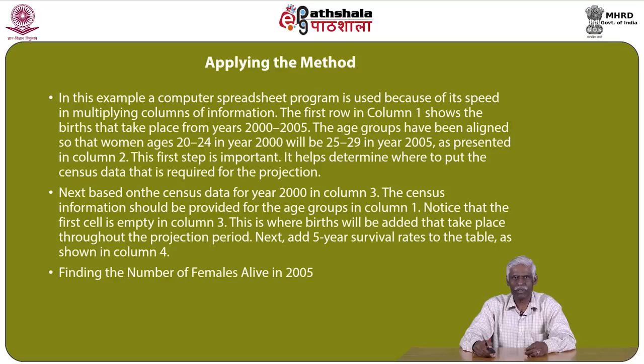The first row in column 1 shows births that took place from 2000 to 2005. The age groups are aligned so that women aged 20 to 24 in year 2000 become 25 to 29 in 2005. This alignment step is important as it determines where to place the census data required for the projection. The census information is provided for the age groups in column 1; note that the first cell in column 3 is empty because births will be added for that projection period.